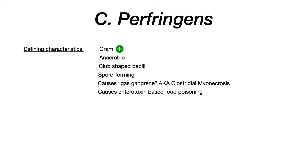The big high-yield here is to know that Clostridium perfringens is associated with something called gas gangrene. Gas gangrene is the layperson term — the actual correct terminology is Clostridial myonecrosis. Myo meaning muscle or soft tissue, necrosis meaning death of that tissue. So this is when muscle and soft tissue breaks down. Clostridium perfringens also causes enterotoxin-based food poisoning, but the most high-yield association for your exam is Clostridial myonecrosis, a.k.a. gas gangrene.